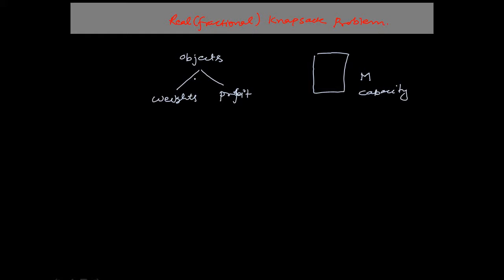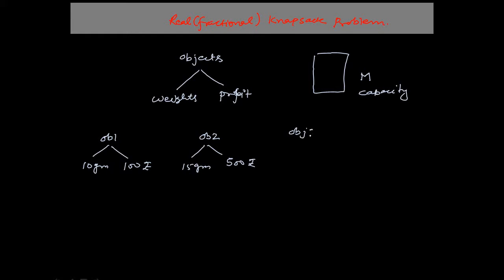The freedom of the greedy thief is that it can take a fractional weight in order to get the maximum profit. For example, object 1 has weight 10 grams and profit 100 rupees, object 2 has weight 15 grams and profit 500 rupees, and object 3 has weight 18 grams and profit 350 rupees.